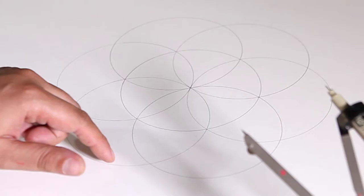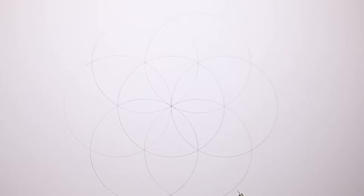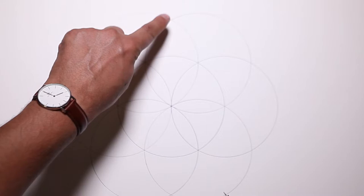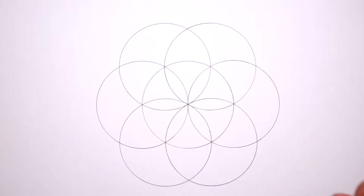Six circles around, one circle in the middle, and we're going to keep adding another circle to let it grow as well. Starting from those points at the end, we're going to do other circles.